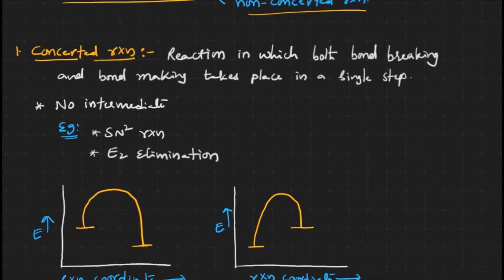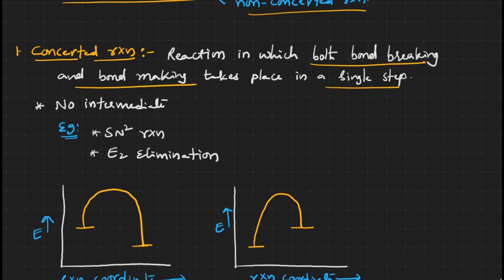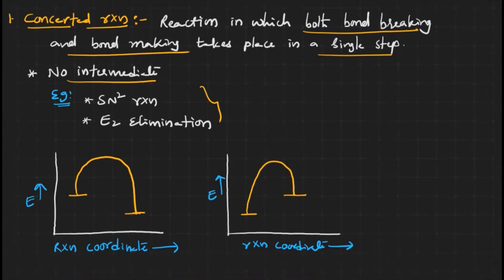Let us see what is meant by a concerted reaction. A concerted reaction means the reaction takes place within a single step, or we can say that both bond breaking and bond making take place in a single step. In concerted reactions, there are no intermediates. For example, SN2 reactions and E2 elimination reactions are concerted reactions.